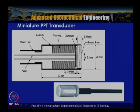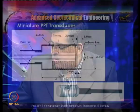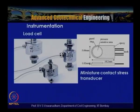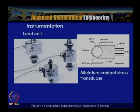Typical load cells from HBM are used for measuring tension as well as compression. Miniature contact stress transducers, roughly button-sized, measure pressure applied to the pressure-sensitive area as a change in voltage. These can be used to measure pressure on a retaining wall, with calibration giving a pressure-versus-voltage relationship.